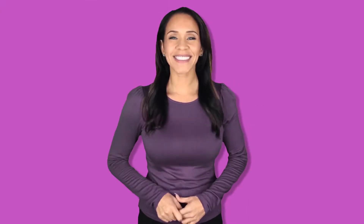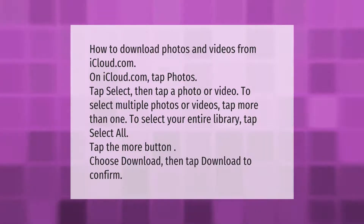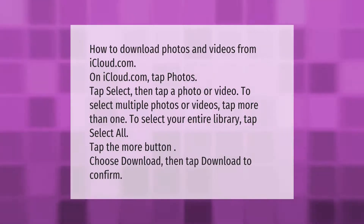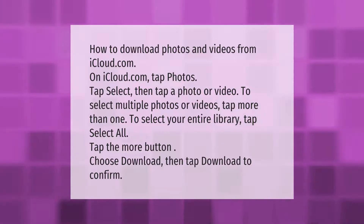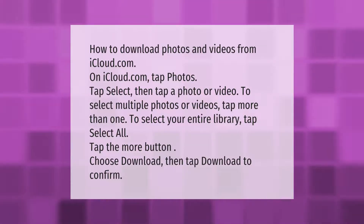How to download photos and videos from icloud.com: on icloud.com, tap Photos, tap Select, then tap a photo or video. To select multiple photos or videos, tap more than one. To select your entire library, tap Select All. Tap the More button, choose Download, then tap Download to confirm.